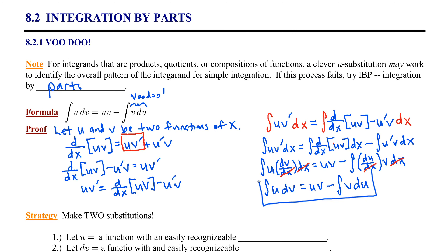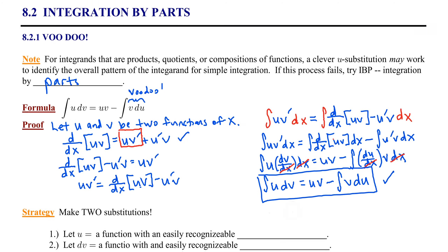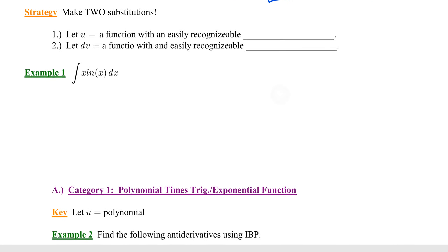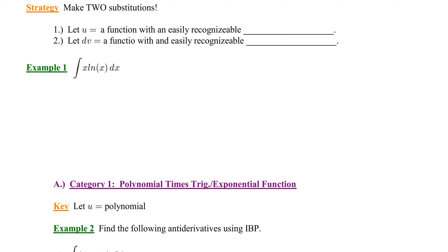Here's the big idea: integration by parts recognizes that the pattern of the integrand is related to the result of a product rule. So when we apply integration by parts, we're essentially reversing the product rule. When we apply it, think of it as making two substitutions — one for u and one for dv.